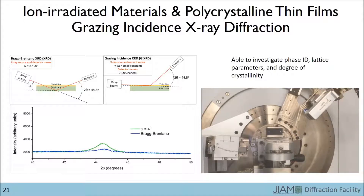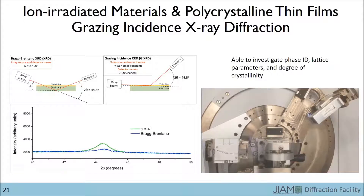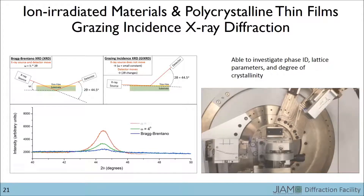We now remain in the grazing incidence configuration, but the grazing angle is reduced to 1 degree and the detector moves to 39 degrees. Again, the detector rotates by 10 degrees to bring the total end angle to 50 degrees, and we see the peak intensity has continued to increase.